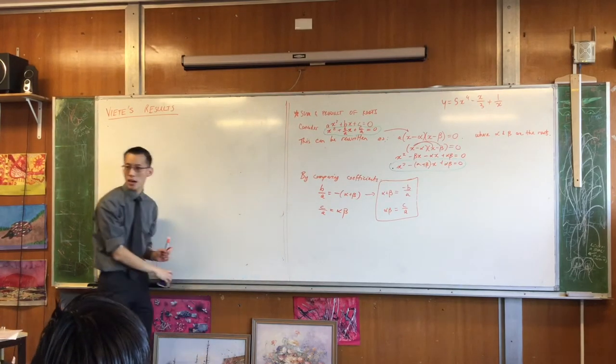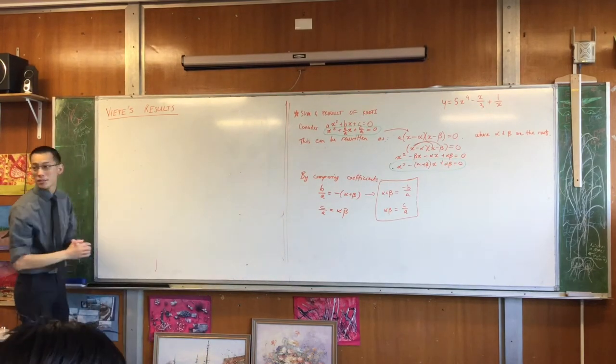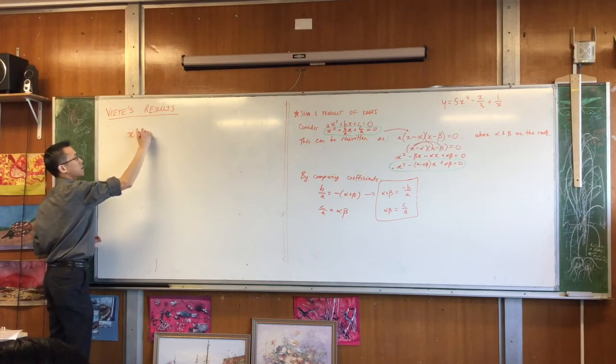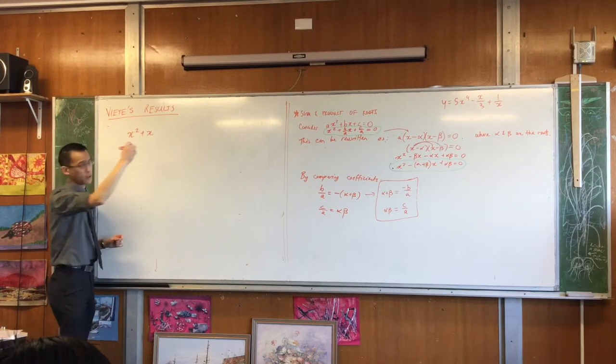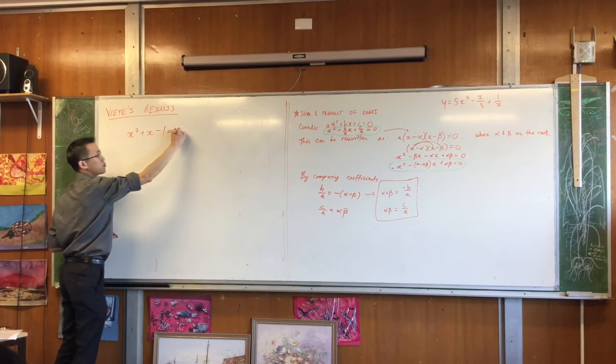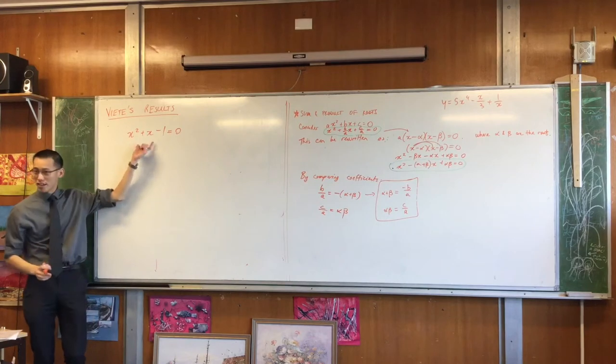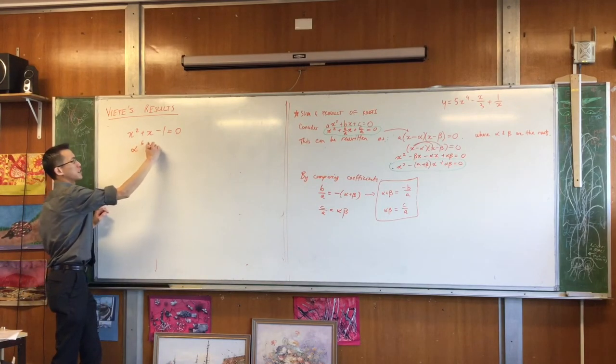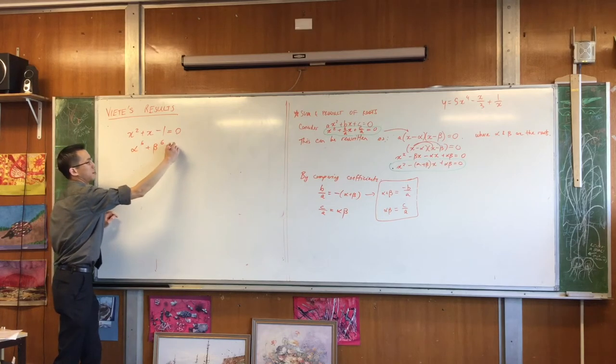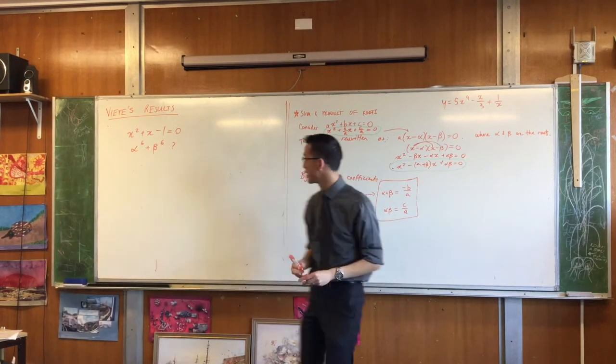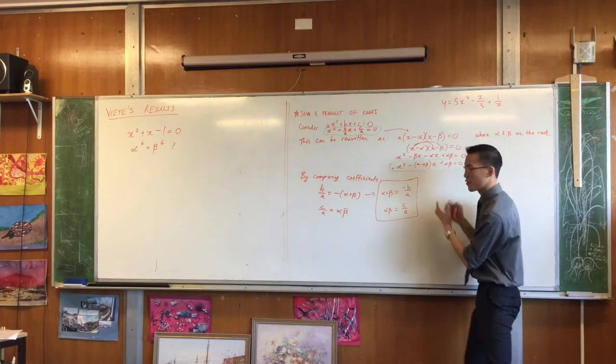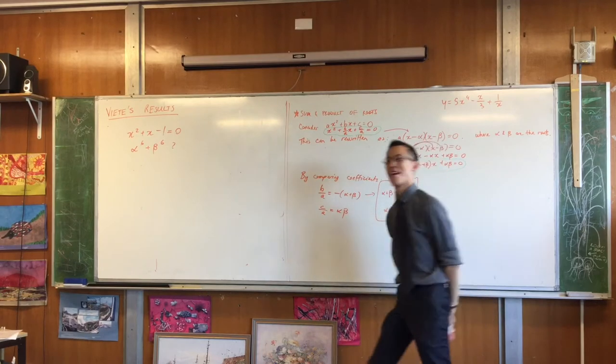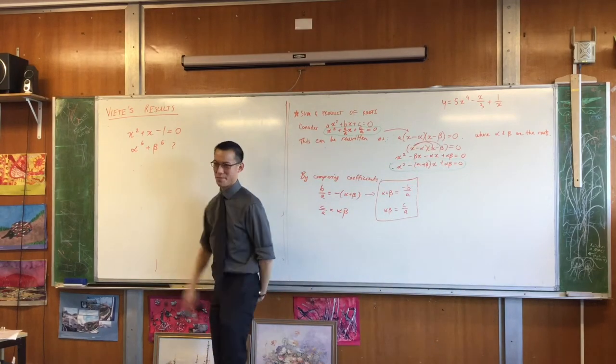So they give you a quadratic. What's the quadratic again? x squared plus x minus 1 equals 0. They give you this, and then they ask you for alpha to the power of 6 plus beta to the power of 6. That's the question where alpha and beta are the roots. Now you can see why I've shown you this to help you with that.